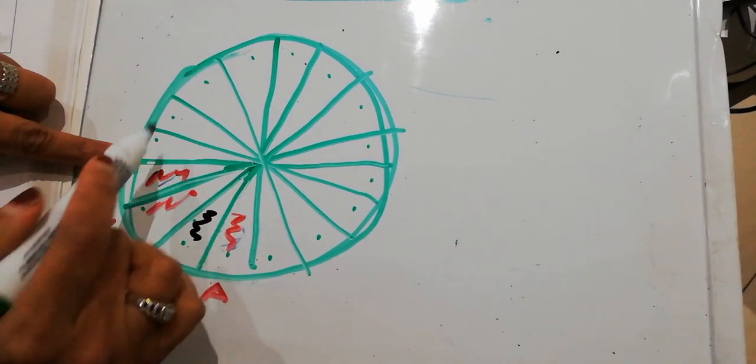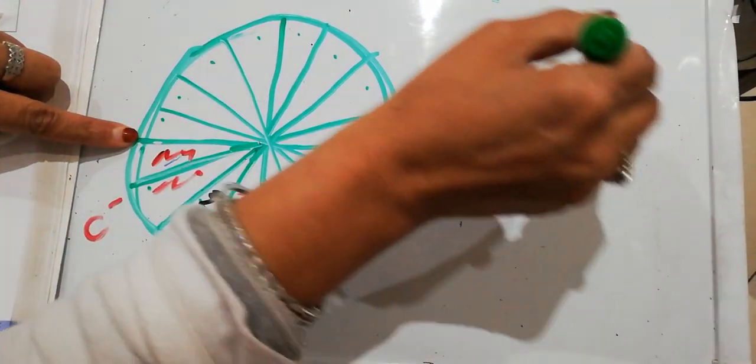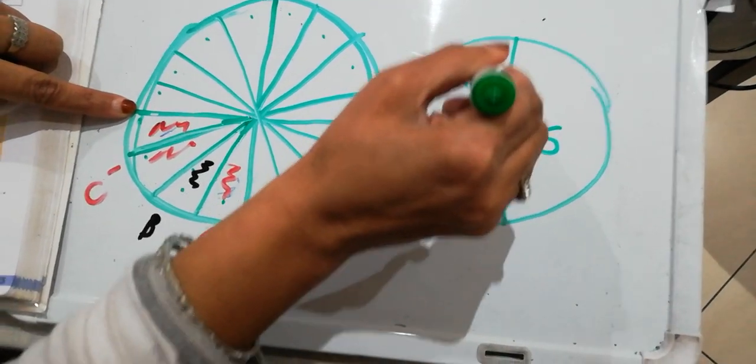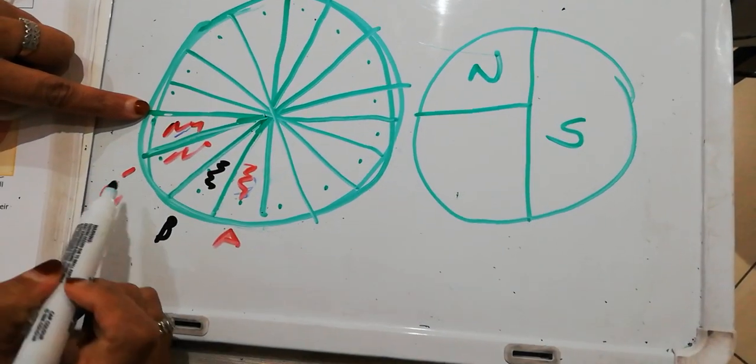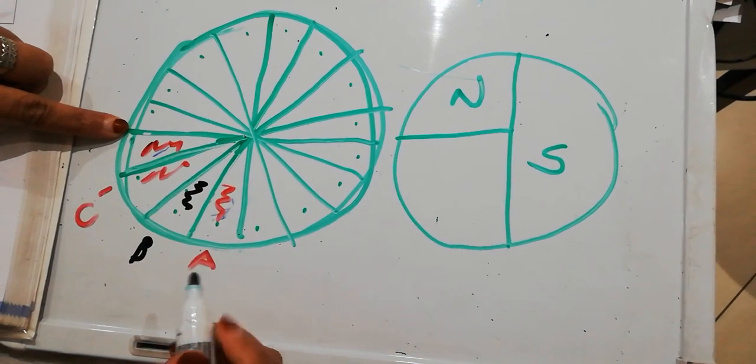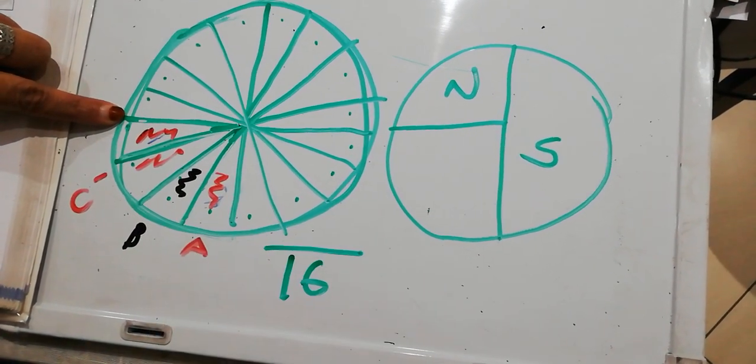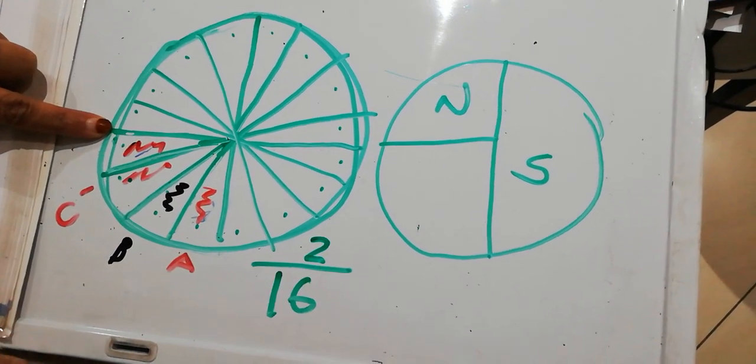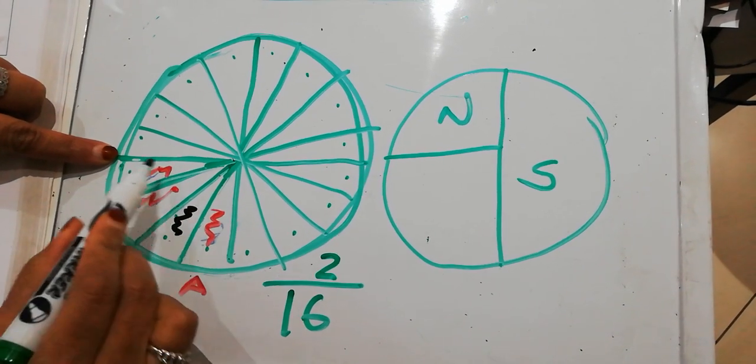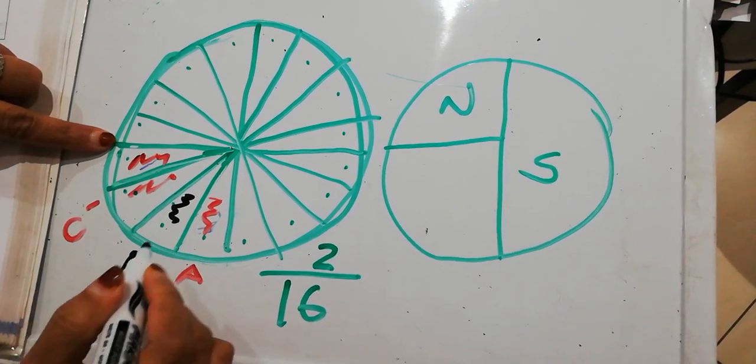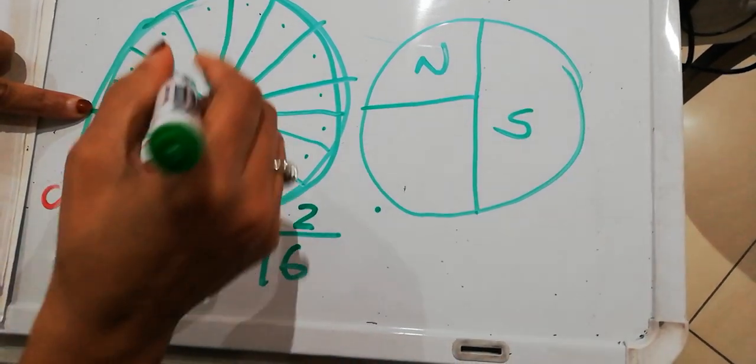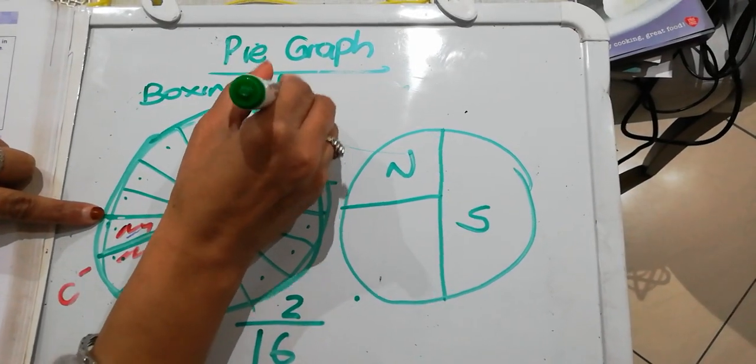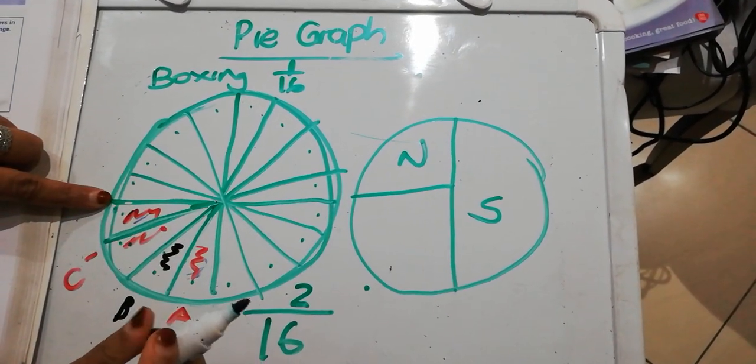So like I said, the netball and the soccer was easy to read off the chart. If I draw another one here, this was soccer, that was netball. That was easy to read off the pie graph. Now let's look at cricket. If this whole thing is divided into 16 parts, that whole pie is divided into 16. Cricket is taking two parts. So 2 over 16 is what fraction cricket represents. If you look at boxing, it's taking one part. So boxing will represent 1 over 16 from the whole graph.